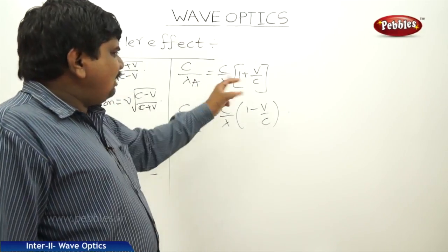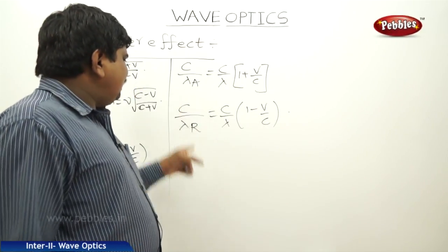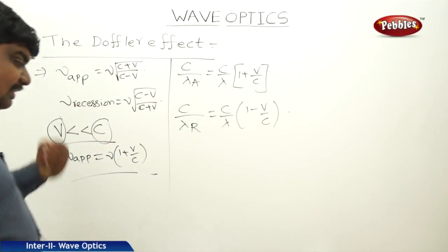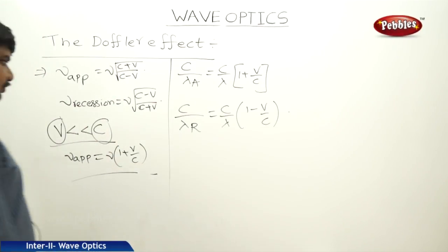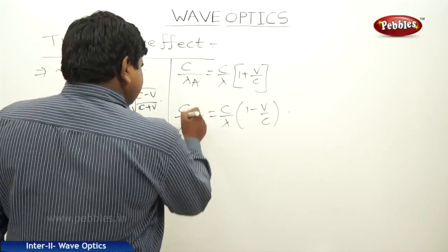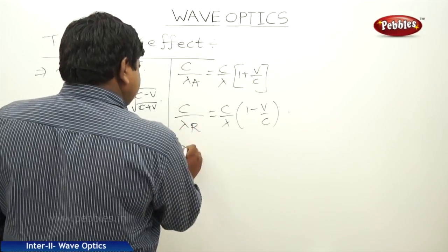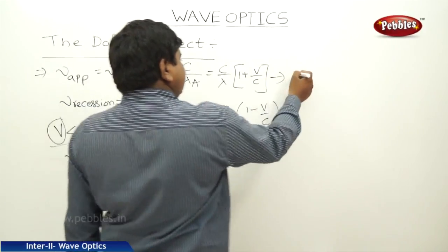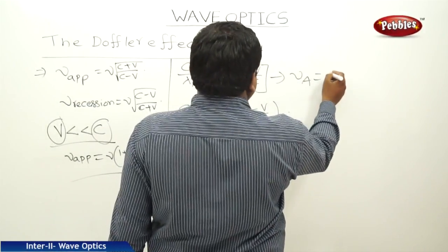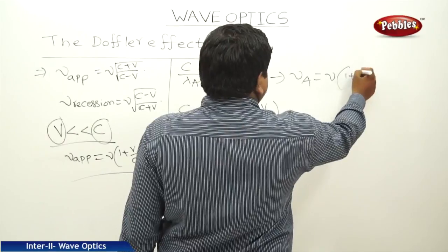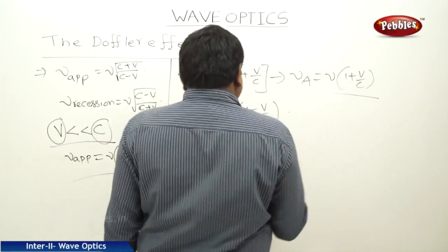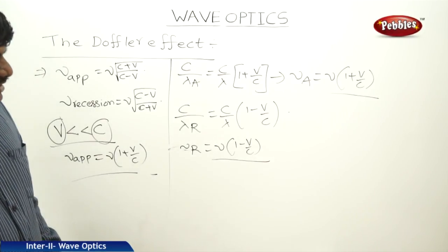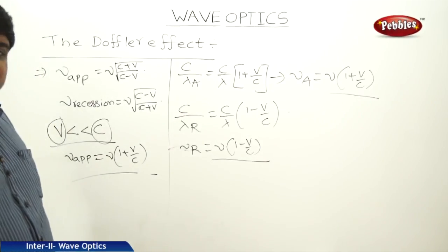So, 1 by lambda approach is equal to 1 by lambda into 1 plus v by c, and 1 by lambda recession is equal to 1 by lambda into 1 minus v by c. Since frequency nu equals c by lambda, therefore nu recession equals nu into 1 minus v by c, and nu approach equals nu into 1 plus v by c. These are the formulas to find the frequency of approach and frequency of recession in case of Doppler shift.